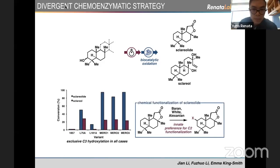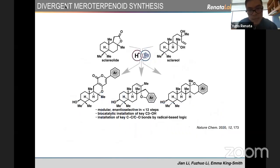We performed a little bit of enzyme engineering to optimize the hydroxylation of sclareol and sclareolide. We were able to get very good conversion and exclusive C3 selectivity in all cases. This is complementary to chemical approaches that always go to C2, which is the innate oxidation site for sclareolide. Taking advantage of this platform, we can come up with modular site-selective synthesis of eight different oxidized diterpenoids. We can do this in less than 12 steps, highlighting the versatility and enabling power of this strategy.